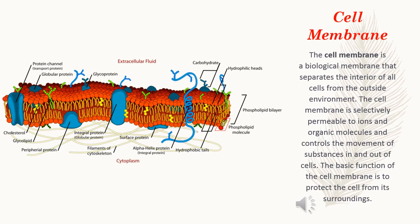Cell Membrane. The cell membrane is a biological membrane that separates the interior of all cells from the outside environment. The cell membrane is selectively permeable to ions and organic molecules and controls the movement of substances in and out of cells. The basic function of the cell membrane is to protect the cells from its surroundings.